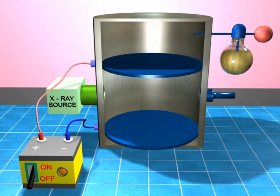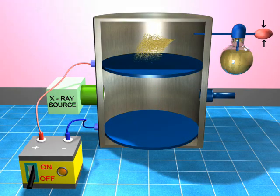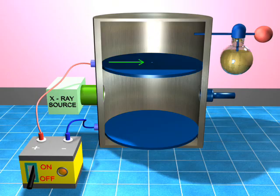Now let us see what we have inside this container. There are two plates over here. The oil is sprayed on the top like this. The top plate has a small hole over here. This hole allows the oil drop to enter this region between the two plates. The top plate is connected to the positive terminal of the battery. The X-ray comes from here and ionizes the gas that is present over here which in turn charges the oil drop that enter in this region.